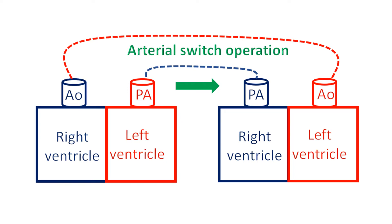After tiding over the crisis, the baby is planned for an arterial switch operation in which the blood vessels are switched to their normally expected position. That is, the aorta is disconnected from the right ventricle and connected to the left ventricle, and the pulmonary artery is disconnected from the left ventricle and connected to the right ventricle. This procedure has to be done within about two weeks of birth. If this is not possible, then several other more complex surgical procedures are planned and executed.